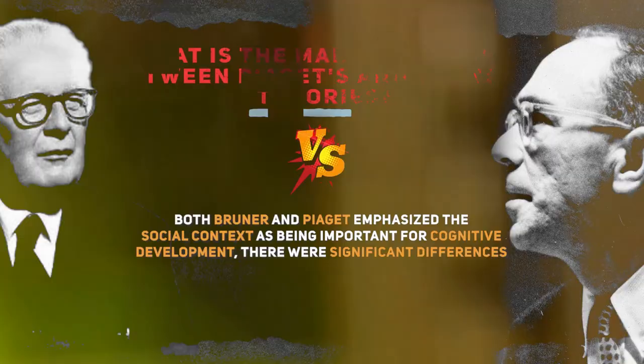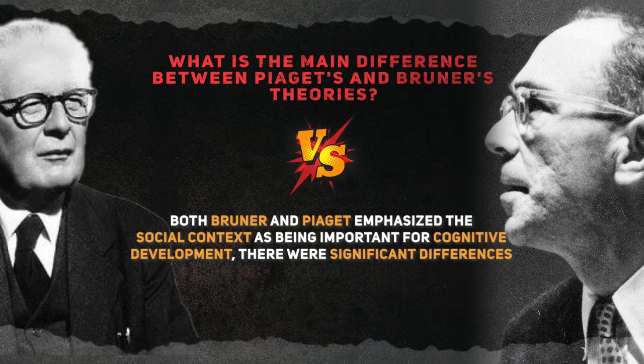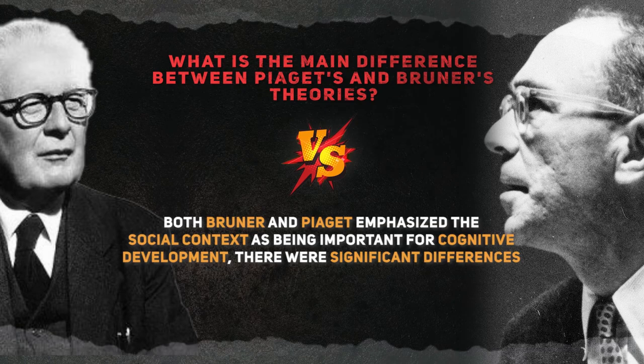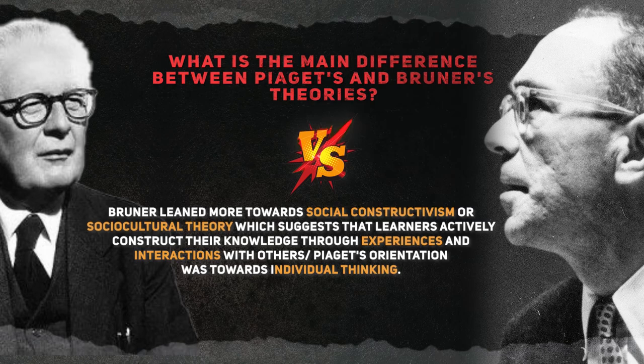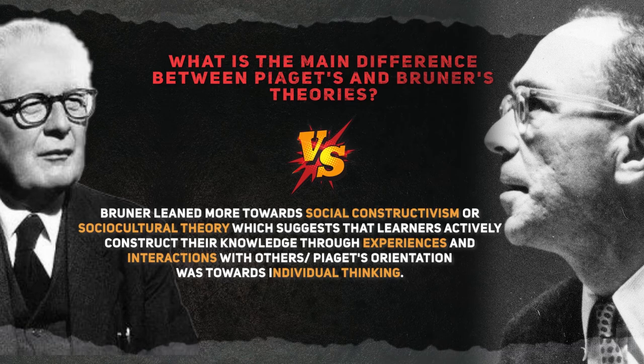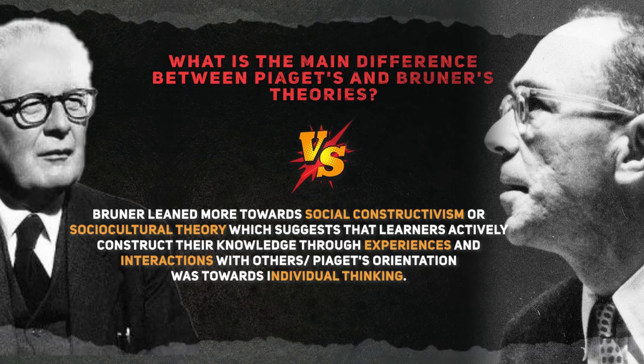What is the main difference between Piaget's and Brunner's theories? Although both Brunner and Piaget emphasized the social context as being important for cognitive development, there were significant differences. Brunner leaned more towards social constructivism, or sociocultural theory, which suggests that learners actively construct their knowledge through experiences and interactions with others. Piaget's orientation was towards individual thinking.